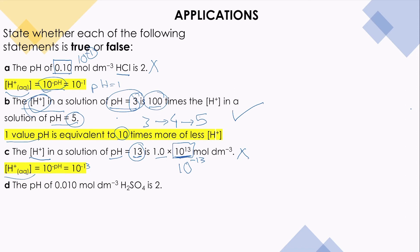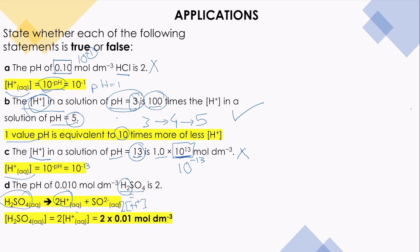Statement D: the pH of 0.01 mol per cubic decimeter H₂SO₄ is 2. H₂SO₄ is a strong acid, but it is diprotic, so the concentration of H⁺ is double the concentration of H₂SO₄. From the equation the molar ratio is 1:2, so [H⁺] = 2 × 0.01 = 0.02. Using pH = −log(0.02), the pH is approximately 1.7, not 2. So this statement is false.